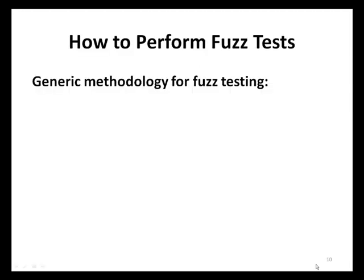Before discussing common fuzz testing application attack vectors such as file format parsers, network parsers, and other code that reads data, let's look at the general methodology behind fuzz testing. In order for a malicious user to attack an application, they need to be able to interact with it in some fashion and provide some type of malformed data. Therefore, the first step for fuzz testing is to determine all possible vectors, or entry points, that a malicious user can use to interact with an application. Examples of entry points may include files read from file systems and data read from network sockets.